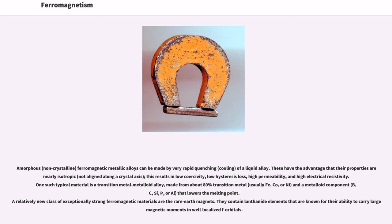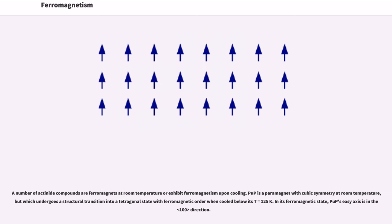A relatively new class of exceptionally strong ferromagnetic materials are the rare-earth magnets. They contain lanthanide elements that are known for their ability to carry large magnetic moments in well localized f orbitals. A number of actinide compounds are ferromagnets at room temperature or exhibit ferromagnetism upon cooling.